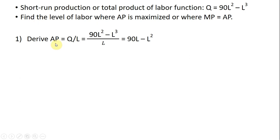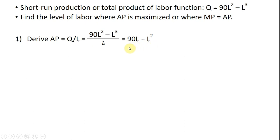Our first step is to derive the average product of labor by taking the quantity function — the short-run production function — and dividing it through by L. Dividing everything through by L, it simplifies to 90L minus L squared. This is our average product of labor, the output per worker.